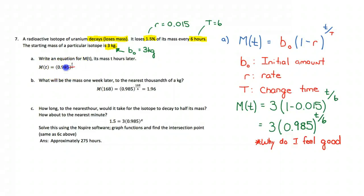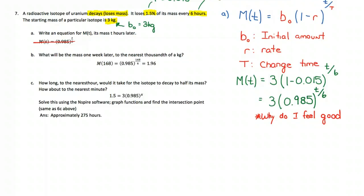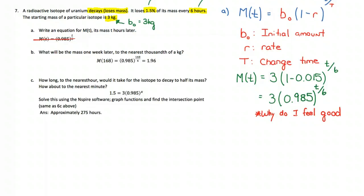You might have noticed the answer here is actually incorrect. It's missing the B0 value. Now this problem really just becomes like any other function problem you've worked with. It says, what will the mass one week to the nearest thousandth of a kilogram?